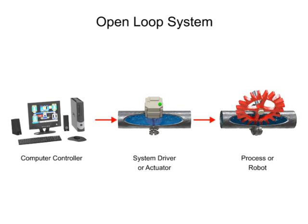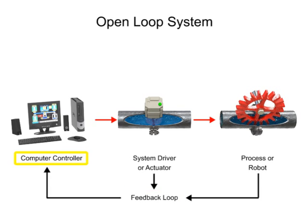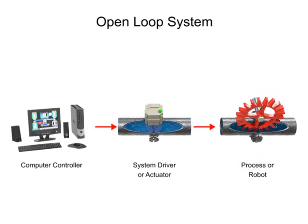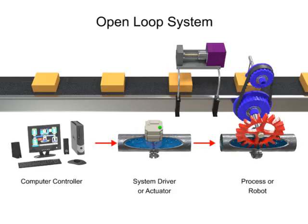This is because there is no feedback to the computer from the system driver or the robot, and thus no updates to the signal outputs can be made. The term process in this illustration simply means any piece of equipment that accomplishes work — this could be a robotic arm, a motor, or an engine.